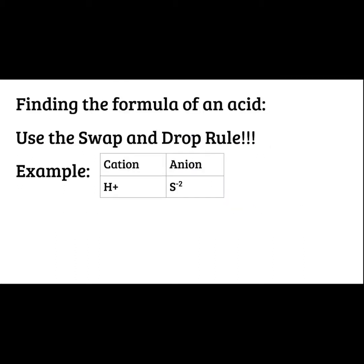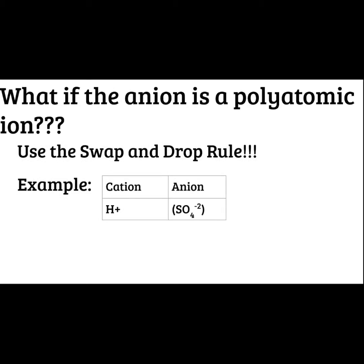Finding the formula of an acid is going to be similar to ionic compounds, so we're going to do swap and drop to figure out formulas. So for H and S, it would just be H2S — we're just swapping and dropping. If the anion is a polyatomic ion, we still use the swap and drop rule. Just remember that SO4 negative 2, the only thing that we're swapping is the charge, so the negative 2 is the only thing that's going to move. That 4 needs to stay attached to the oxygen at all times, so make sure you're only moving the number at the top. So this one would be H2SO4, and you can put that in parentheses, or you really don't have to in this case.